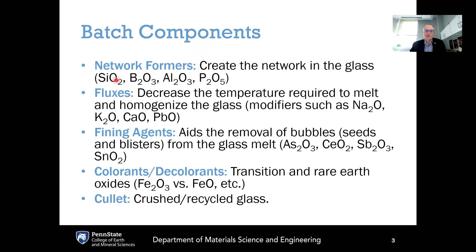If it's only silica, the melting temperatures would be too high. Therefore, we need to incorporate fluxes into the batch in order to lower the melting temperature, which helps improve meltability and makes it easier to homogenize the glass. Typical fluxes include network modifiers like sodium oxide, potassium oxide, calcium oxide, or magnesium oxide. Lead oxide in so-called crystal glass also acts as a flux with a high refractive index. B2O3, even though it's a network former, also acts as a flux because it lowers the melting temperature compared to silica in borosilicate glasses.